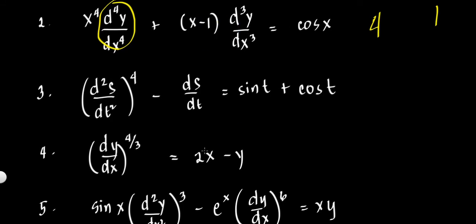Example 3: We have the second derivative of s with respect to t, raised to 4, minus the first derivative of s with respect to t, equals sine t plus cosine t. The highest derivative is d²s/dt², since s is differentiated twice, which is higher than ds/dt. So the order is 2. The highest order derivative is raised to the 4th power, so the degree is 4.